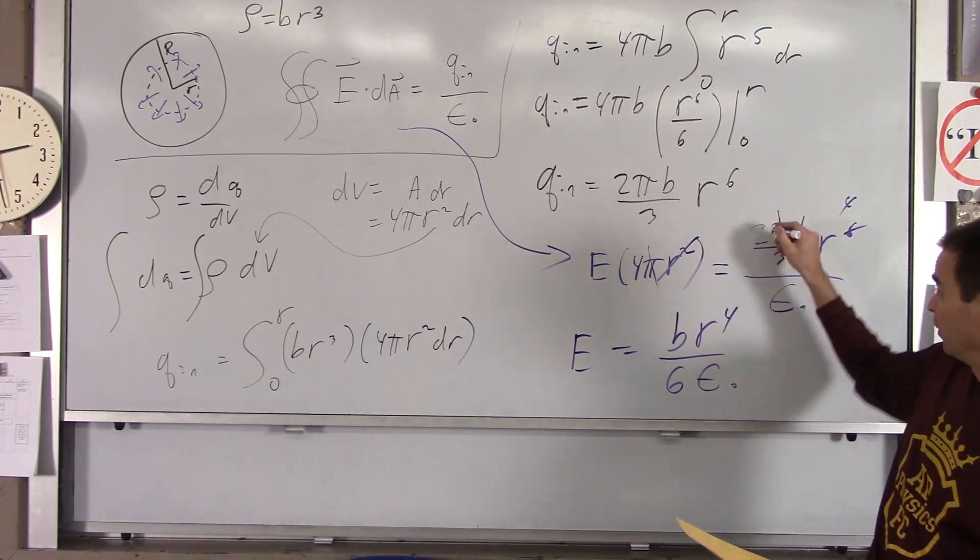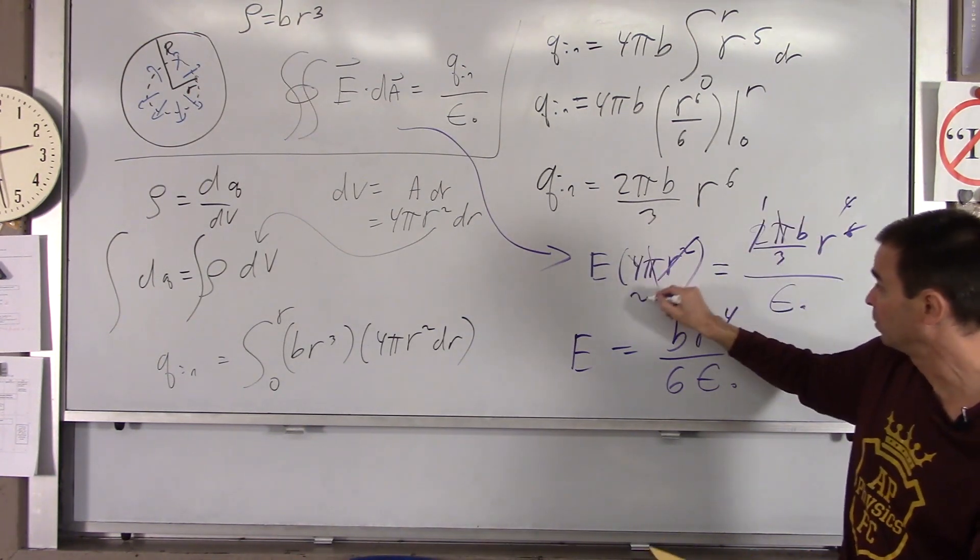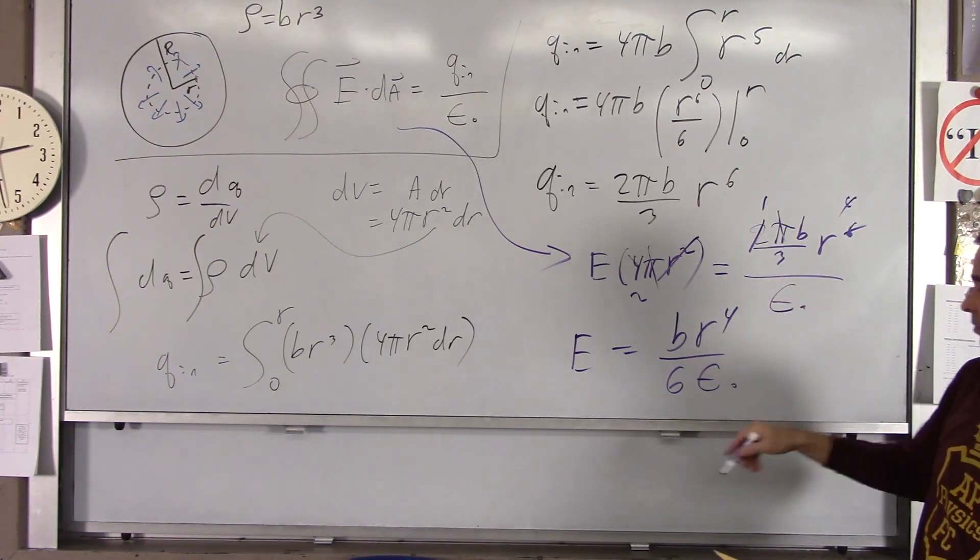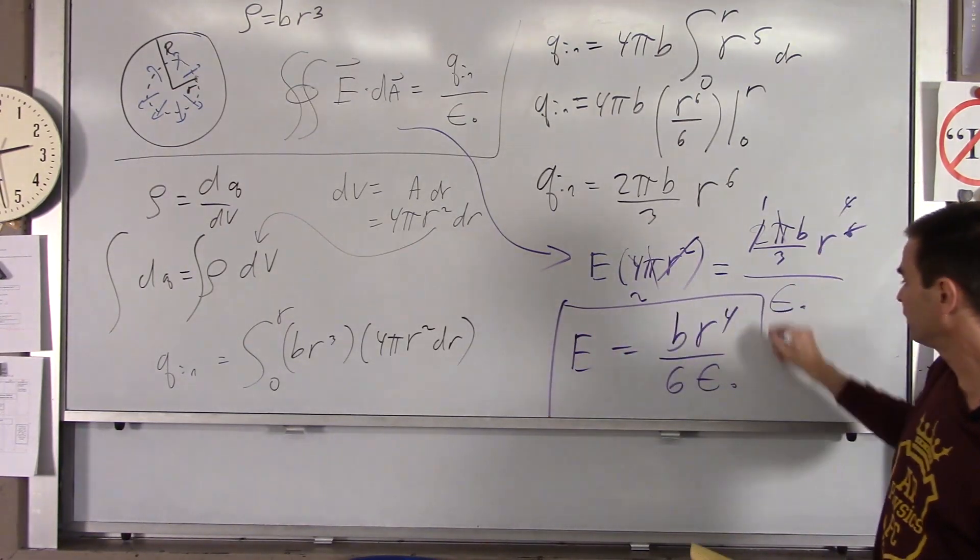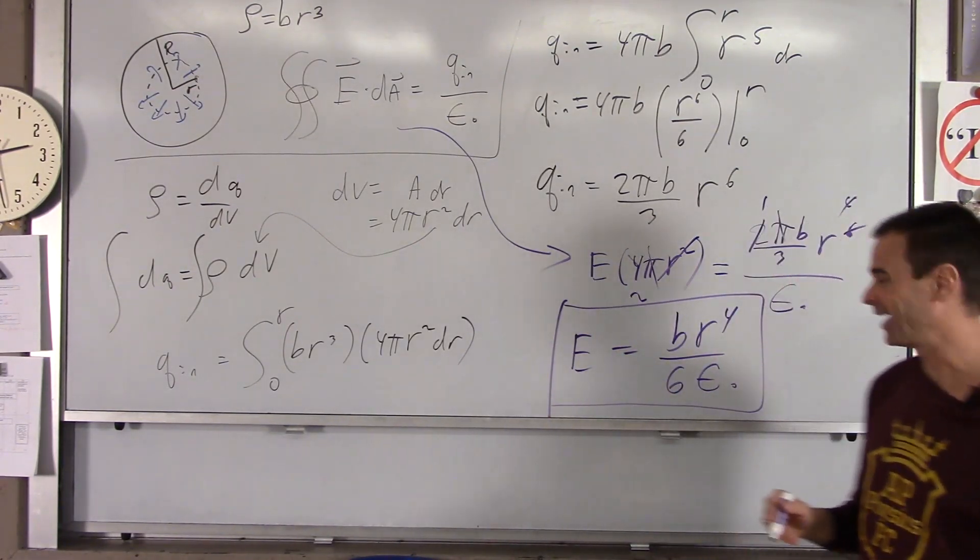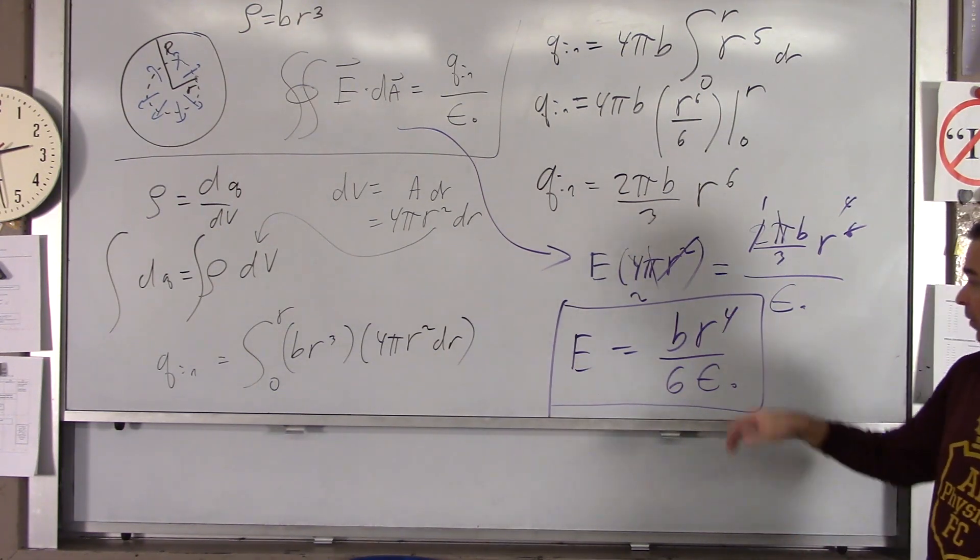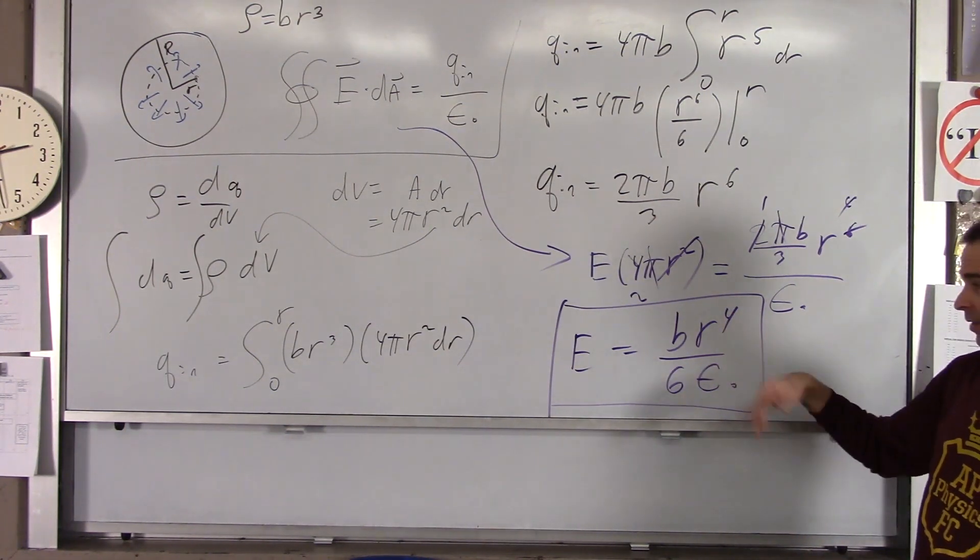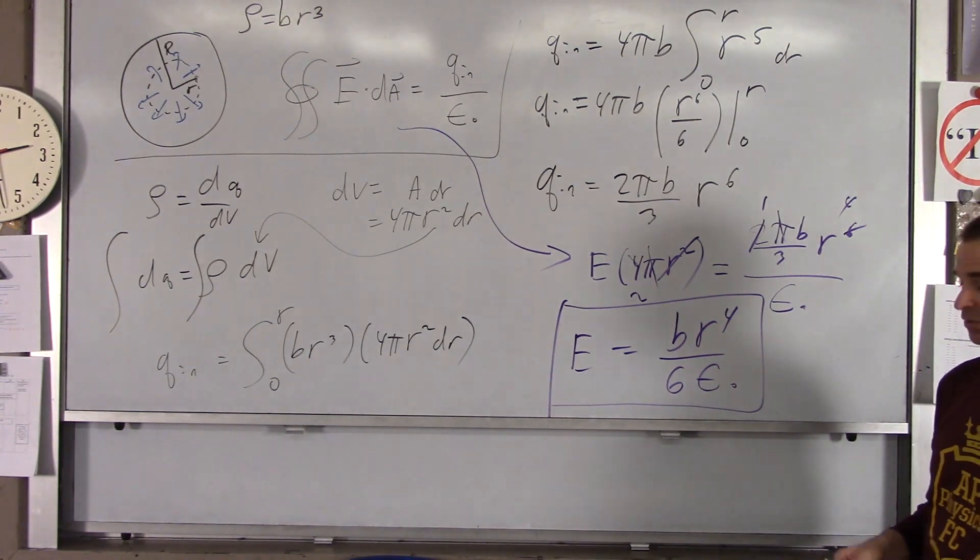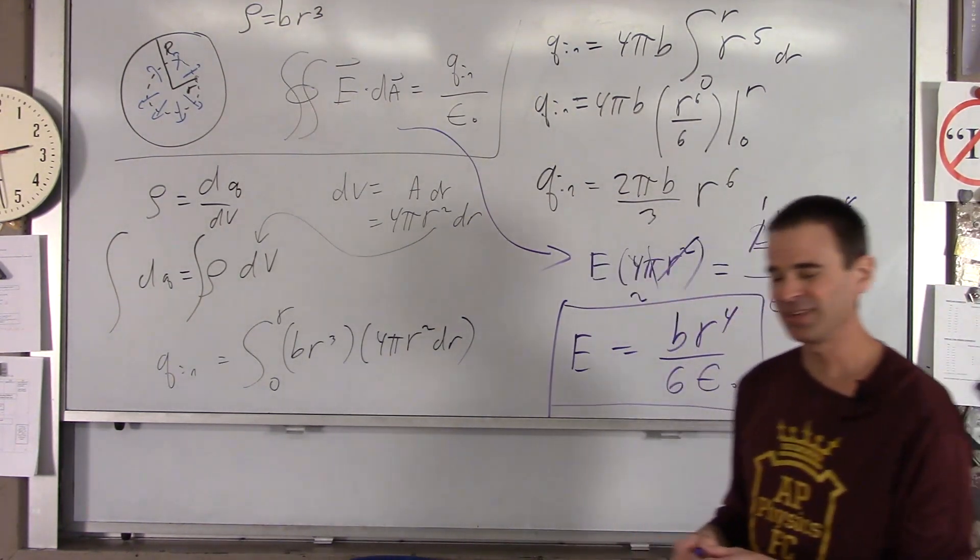The 2 and the 4 become an 8. The 3 goes down here. You got r to the second times r to the sixth. I mean, r to the second, r to the sixth partially cancel. This becomes r to the fourth. And you get a result. E is equal to b r to the fourth over six epsilon naught. When you move this, this becomes a 1, this becomes a 2. When you move that 2 down here, 2 times 3 is 6. So that is your electric field inside of the fuzzy ball of charge. Notice it varies with r to the fourth.